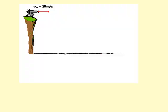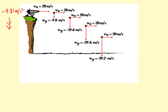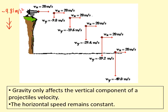In this diagram, the cannon is firing the cannonball horizontally. If it's fired horizontally, the initial upward and downward speed is zero. Gravity pulls it downwards while horizontally there's no force — we're ignoring air resistance. Horizontally the speed stays at 20 meters per second, but vertically it accelerates at minus 9.81 meters per second squared, and after each second it increases by that amount. So gravity only affects the vertical component of velocity; the horizontal speed remains constant.